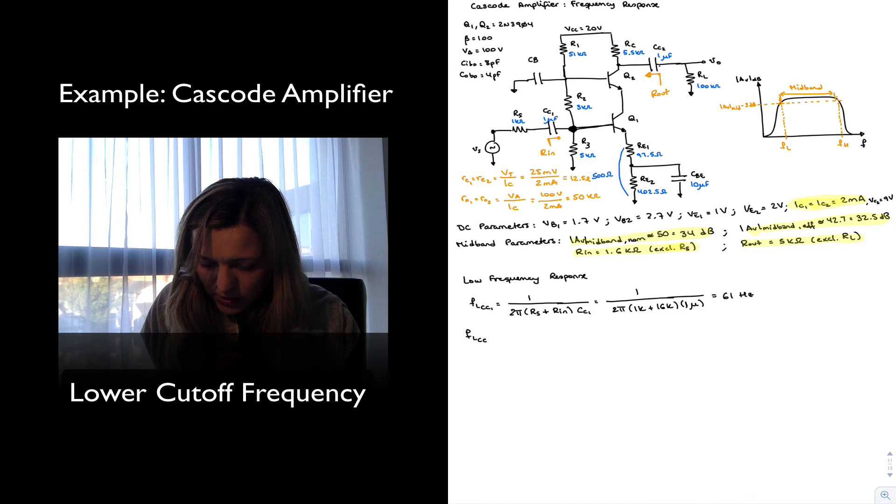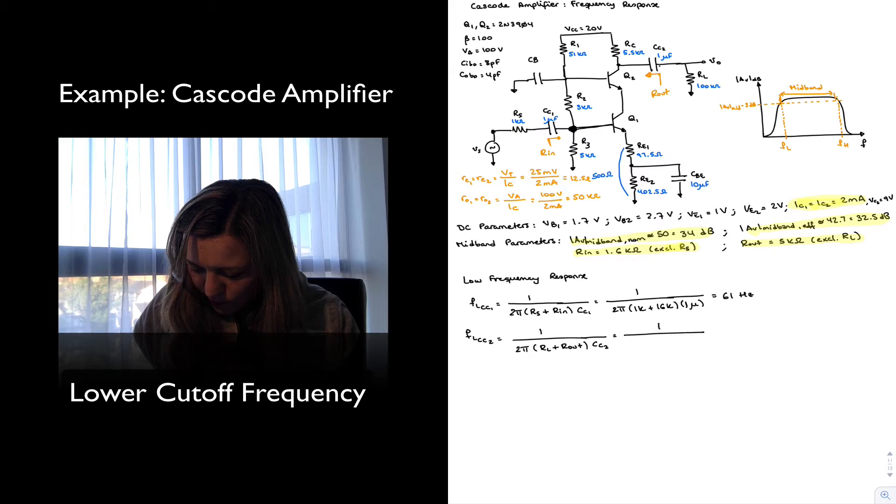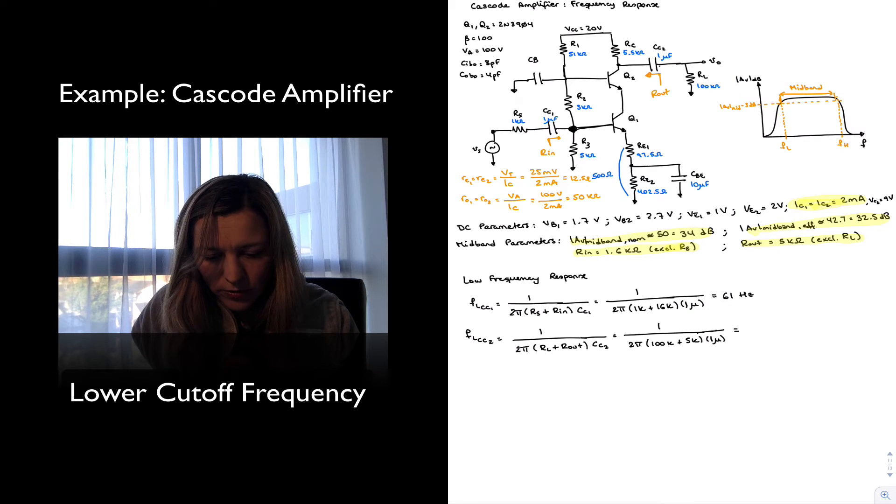The low cutoff frequency due to CC2 will be 1 over 2π, and in this case it's RL in series with Rout which we calculated, times CC2. So 1 over 2π, 100k plus 5k times 1 micro. And this gives me around 1.51 hertz.